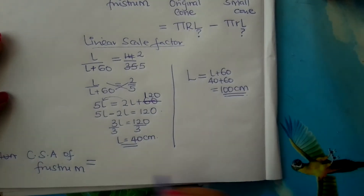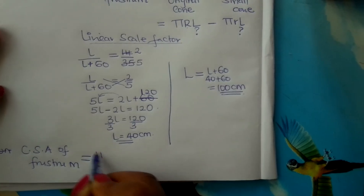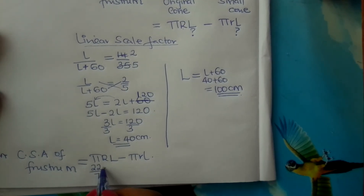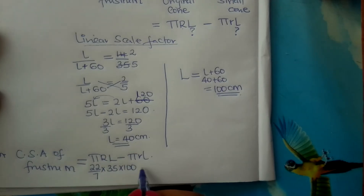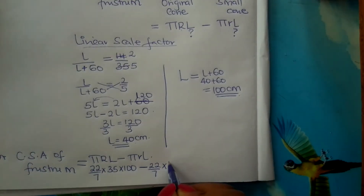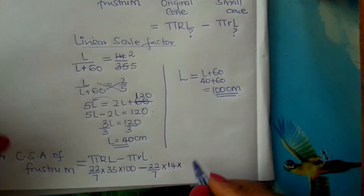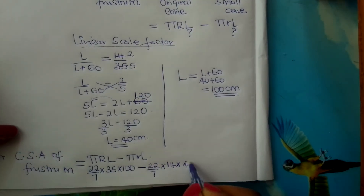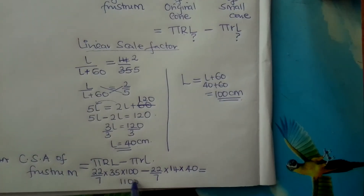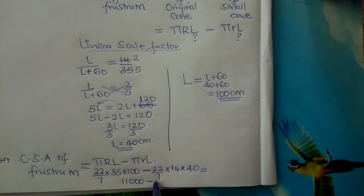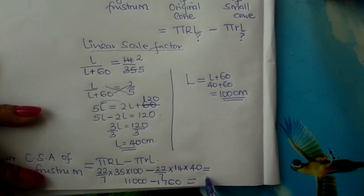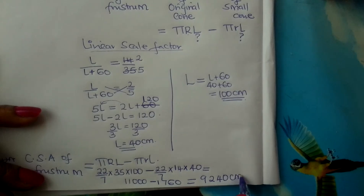The curved surface area of the frustum is π R L minus π r l. This gives us 22/7 × 35 × 100 minus 22/7 × 14 × 40. Working this out: 11,000 minus 1,760 equals 9,240 centimeters squared. This is the curved surface area of our frustum.